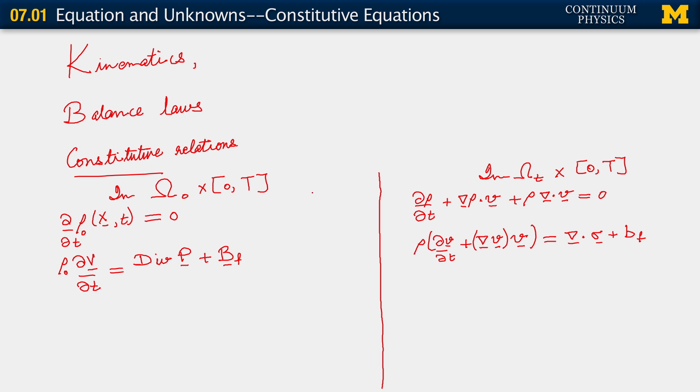So this is our balance of linear momentum in the reference configuration on the left. In the current configuration, to be consistent with what I wrote for the balance of mass, let me write this thing properly. We have rho proper partial time derivative of v plus spatial velocity gradient acting on the velocity. All of this is the material time derivative of the spatial velocity. This then is equal to we have divergence of the Cauchy stress plus the body force. Those are our balance equations. So we have here one equation, and here we have three because we know that this is a vector equation. The second PDE, the balance of linear momentum, is a vector equation, so it's really an equation for each component. Same here, one for balance of mass and three for balance of linear momentum.